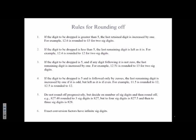If the digit to be dropped is less than 5, the last remaining digit is left as it is. So if you have 12.4 and you want to get rid of 4, because you have to round it to 2 significant digits, 4 is less than 5, so the answer is 12.